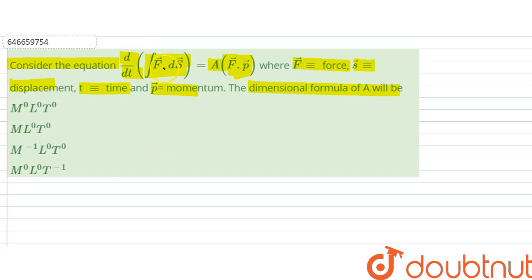So, this is d/dt of F dot ds. F dot ds is Newton meter. And differentiation d/dt would lead to Newton meter per second.